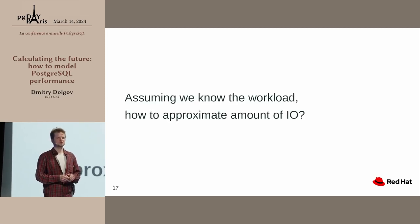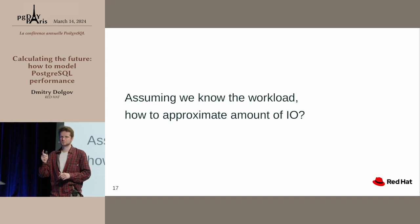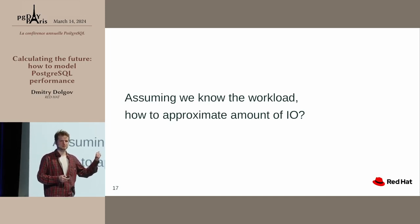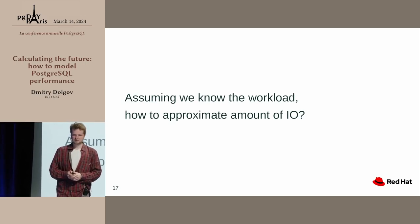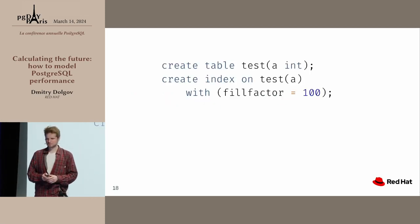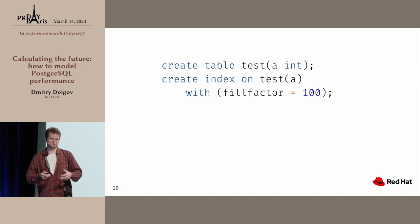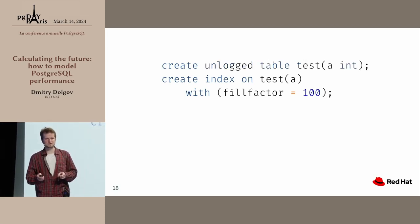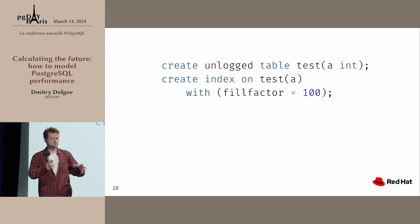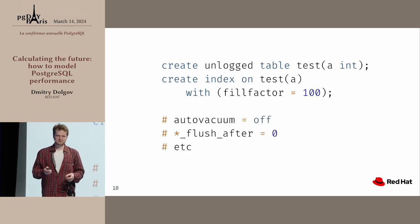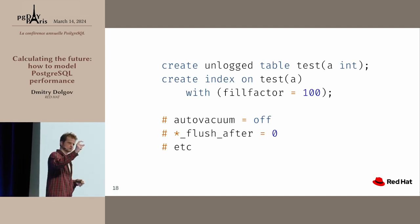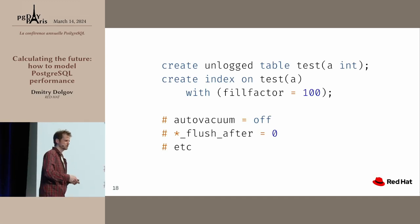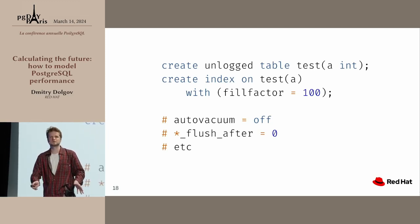Now let's try something more advanced — let's try to approximate I/O. Let's figure out how much I/O we're going to generate under a particular workload with this simple index. We have to slim down our use case even further: we're not dealing with write-ahead log, we're not interested in that — just this particular index. We also have to turn off vacuum, flush-after settings, background writer, checkpointer, and so on, to concentrate on this particular small part of Postgres.